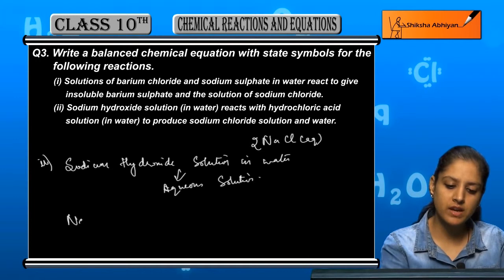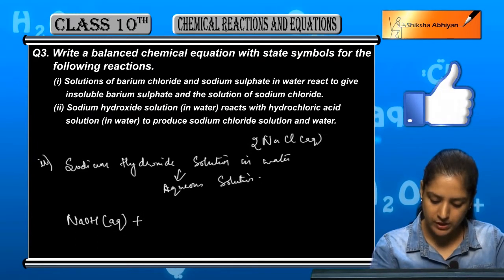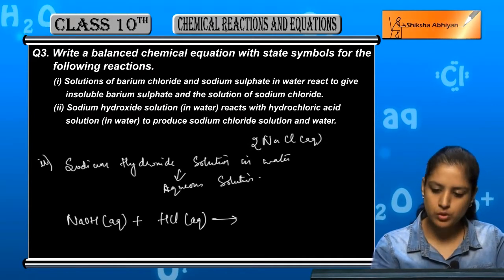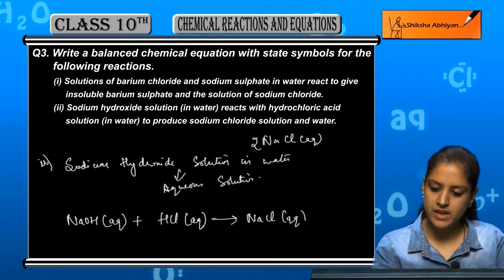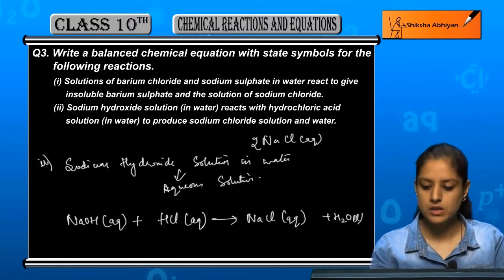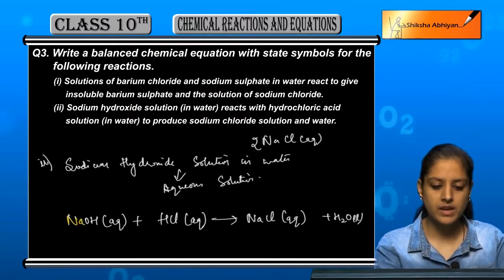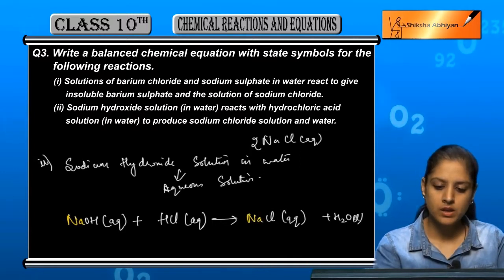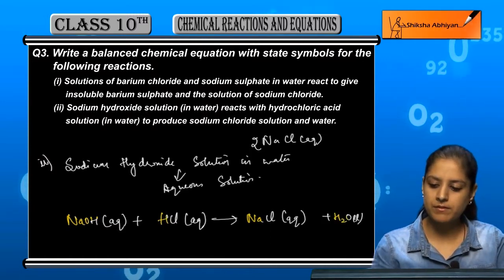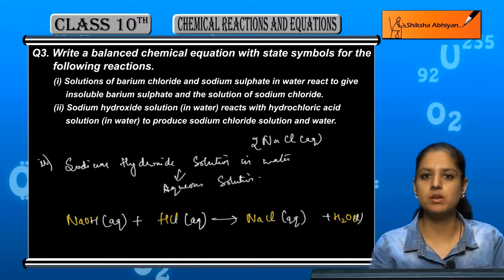So first we have sodium hydroxide NaOH as an aqueous solution, plus hydrochloric acid HCl also aqueous. This gives us sodium chloride NaCl aqueous, plus water H₂O which is liquid. Now let us check the balance: Na is 1 on each side, H is 2 on left and 2 on right, O is equal on both sides, Cl is 1 on both sides. So it is a balanced chemical equation.